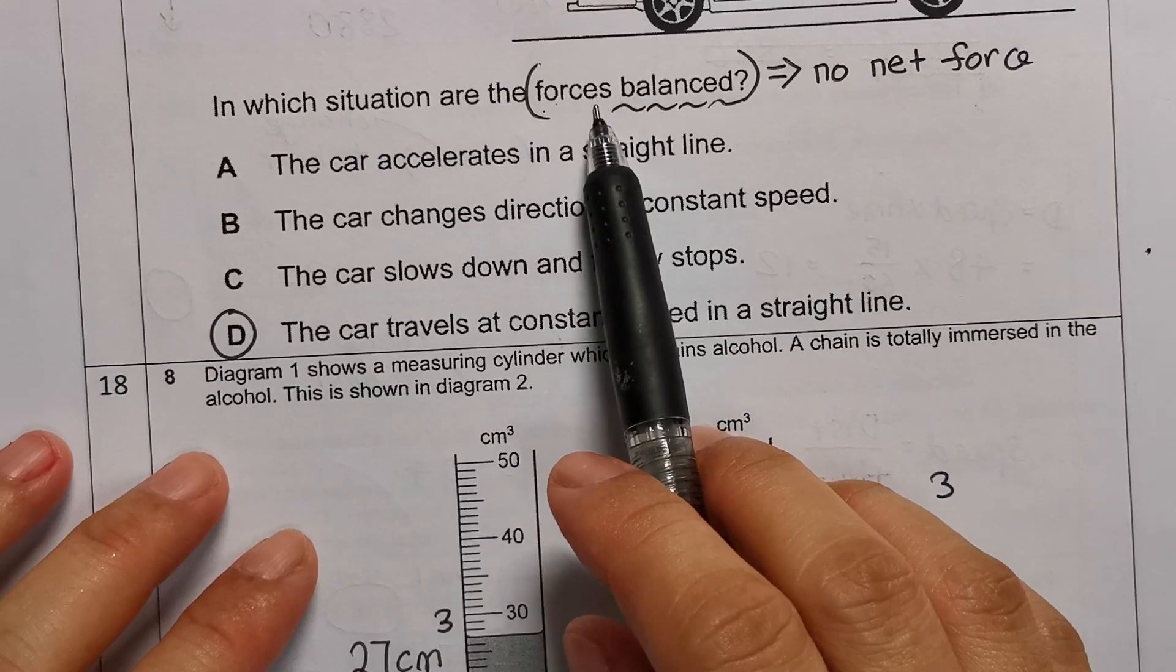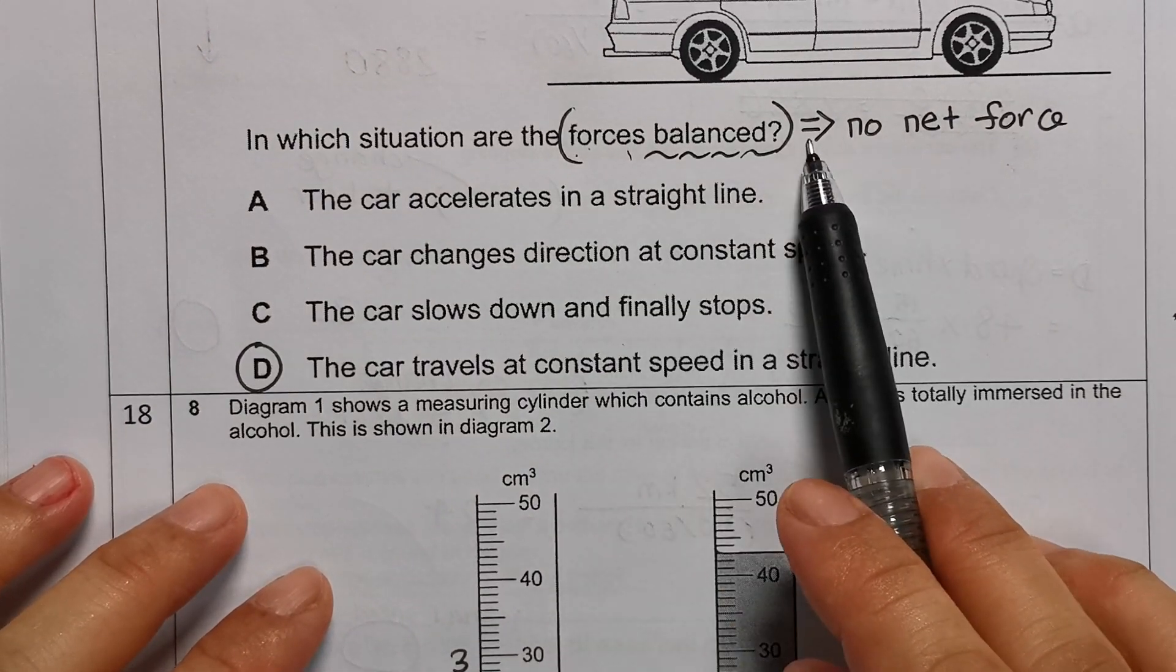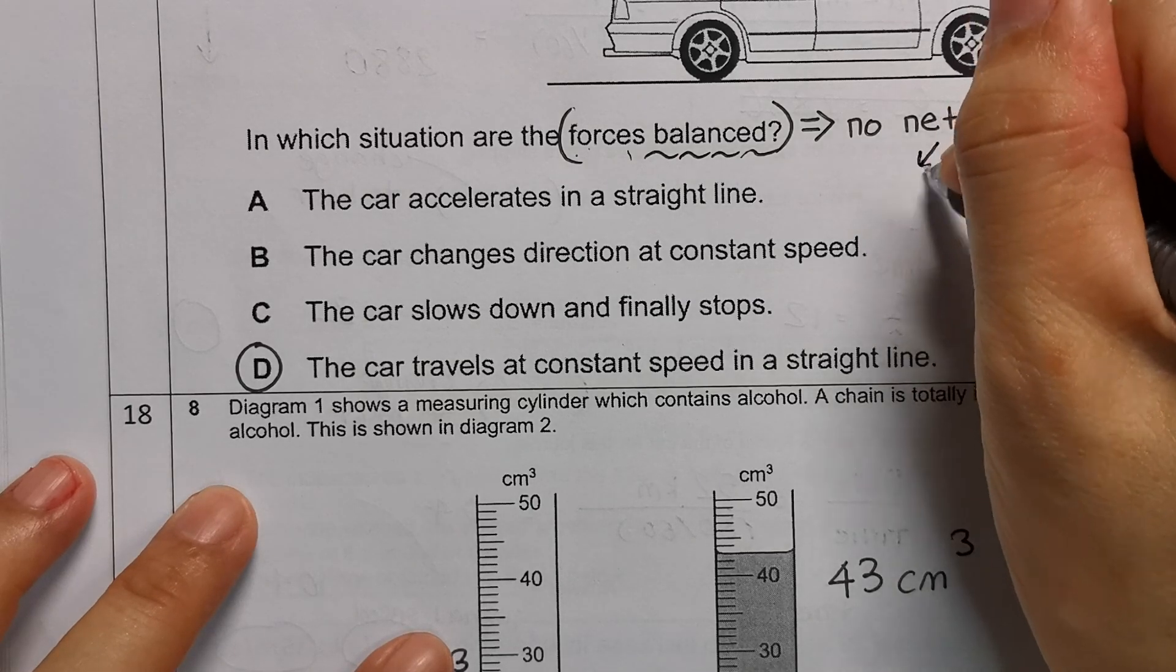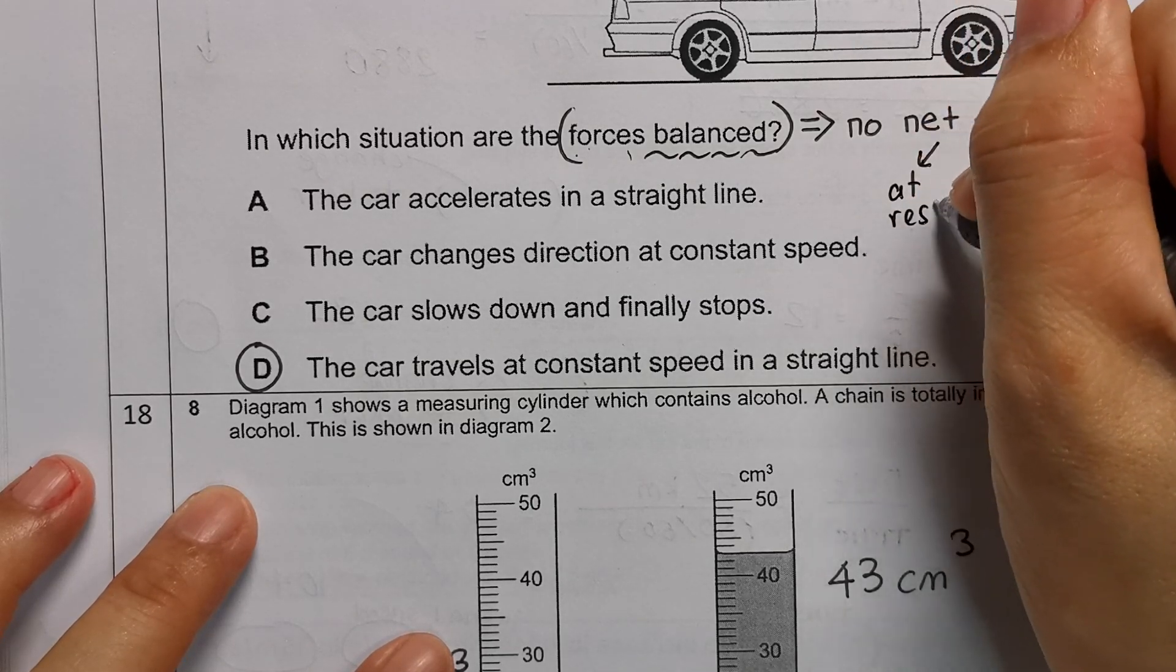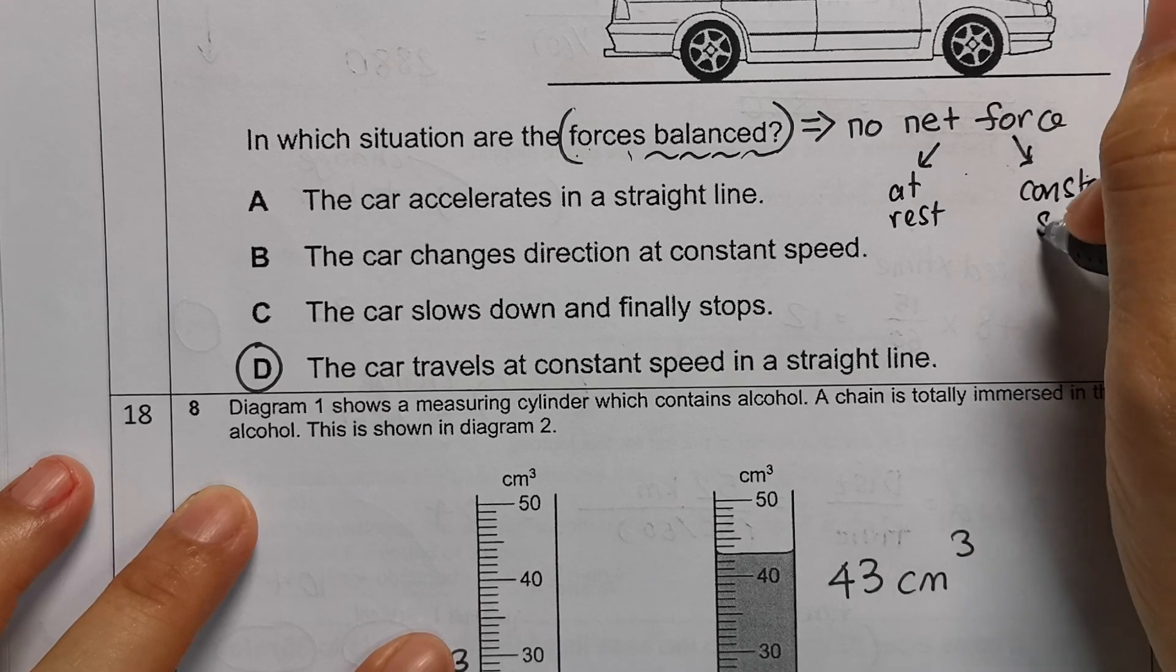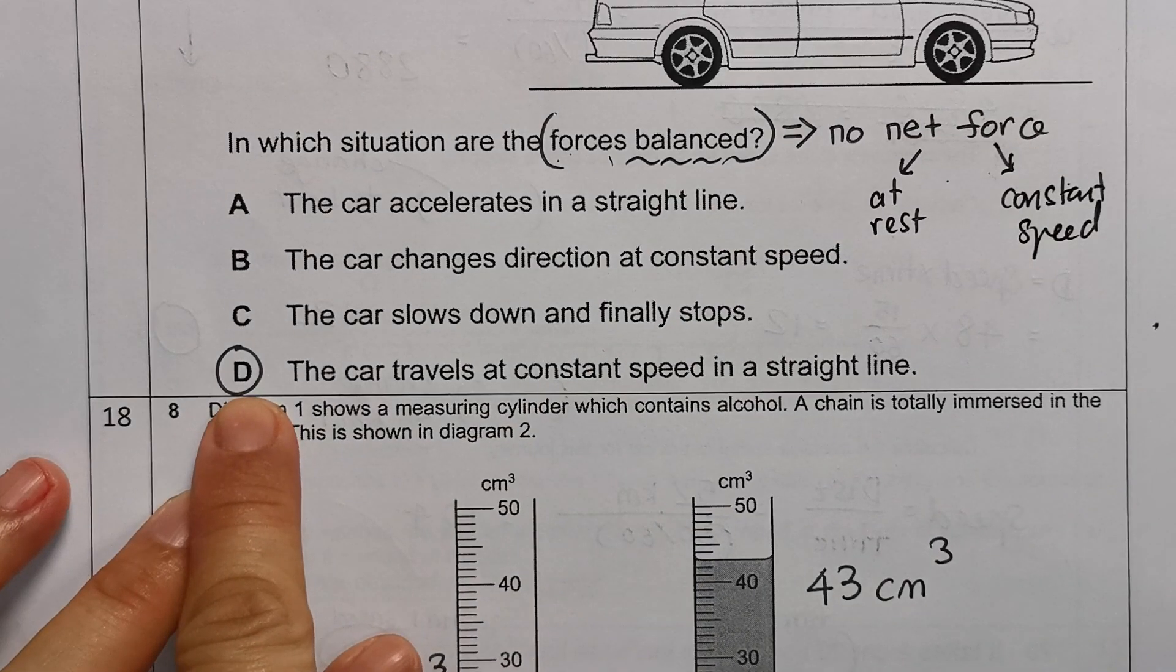So if the object is not accelerating, what could it be doing? Not moving or moving with constant speed. So let's look at this question: they say the forces are balanced, so that means there are no net force, which means the object is either at rest or the object is moving with constant speed. So if you look at the options given to you, only D is the constant speed.